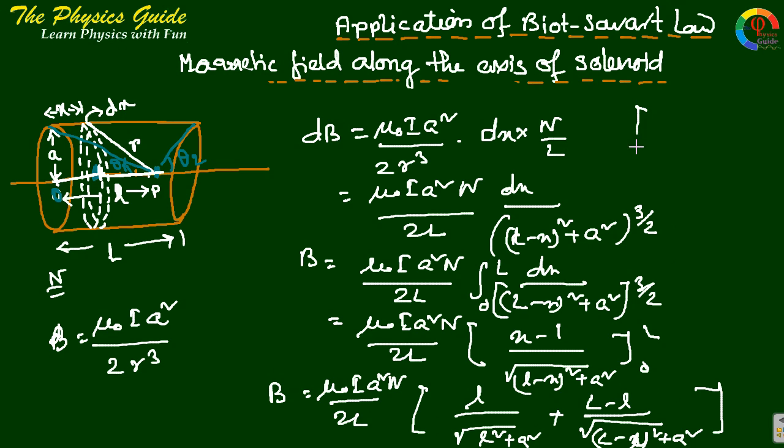We can put this result in terms of theta. That is B equals mu0 I A squared N by L times L by root over L squared plus A squared equals cos theta 1 from the figure, cos theta 1 and this cos theta 2. This is the result.